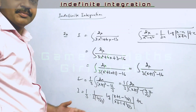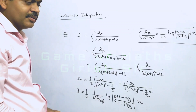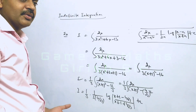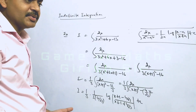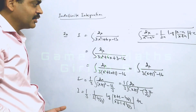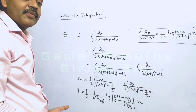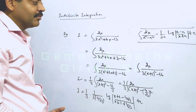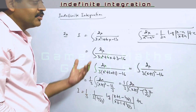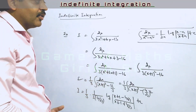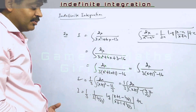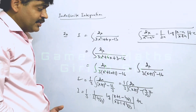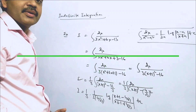So this is an easy category. You have to be careful: if the coefficient of x squared is not 1, make it 1. Then combine the terms containing x carefully and make a perfect square. It will reduce to one of the standard types, and you can use the direct formula to evaluate the answer. We'll see more in the next section. Thank you.